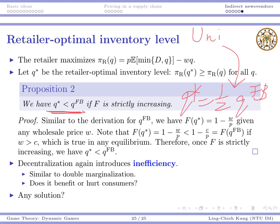This is similar to double marginalization. We can also consider what happens to consumers: since the retail price is identical, what matters for consumer welfare is only the inventory level. Consumers prefer higher inventory, and unfortunately, from centralization to decentralization the quantity becomes smaller, so decentralization hurts consumers.